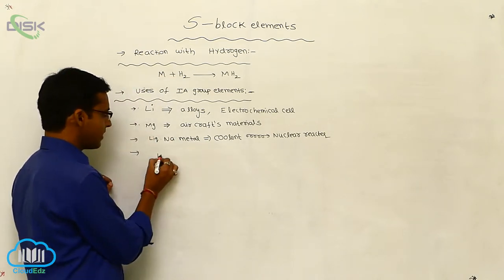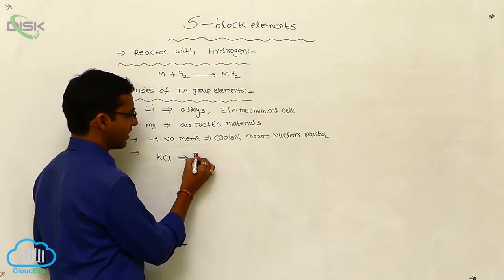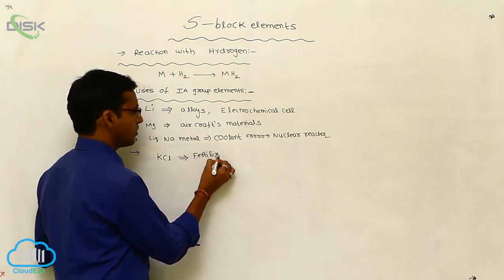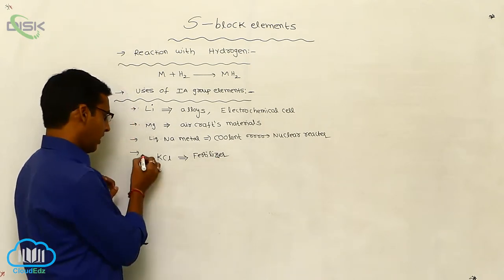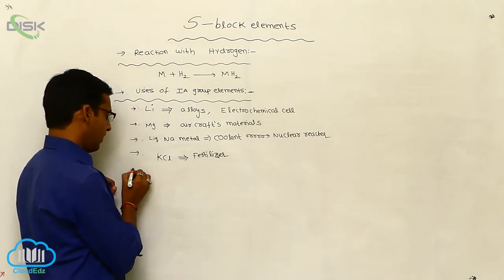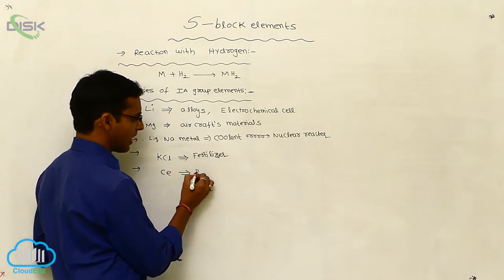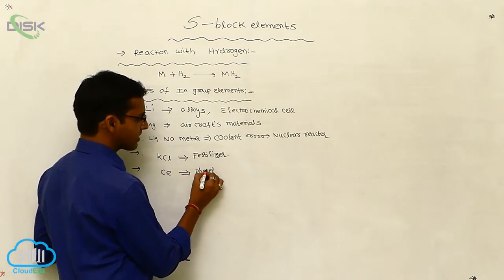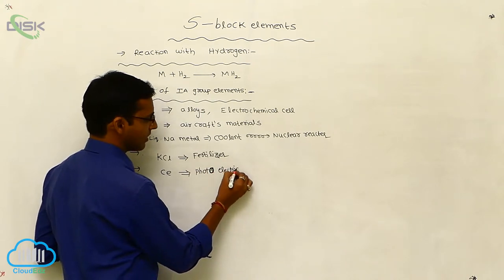In a nuclear reactor, the chemical substances are cooled with the help of liquid sodium metal. Potassium chloride (KCl) is used as a fertilizer, and cesium metal acts as a photoelectric cell.